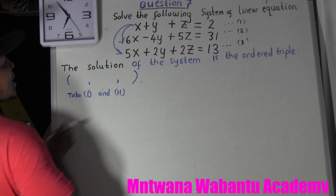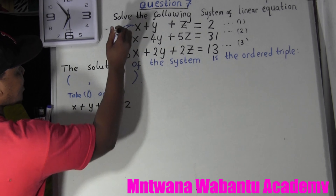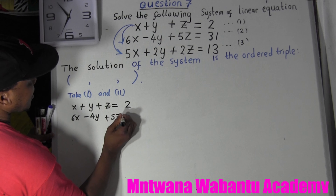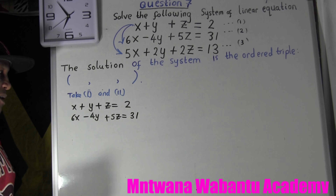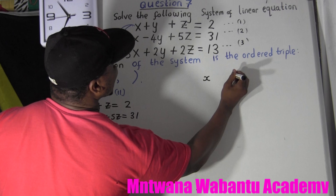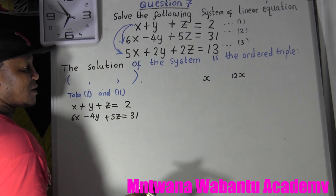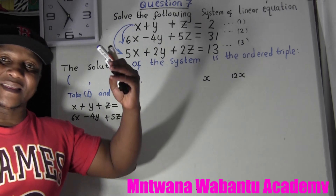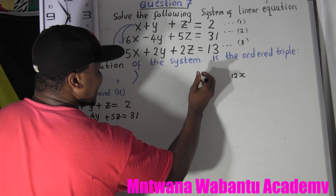Take the first equation: x + y + z = 2, and the second equation: 6x - 4y + 5z = 31. For me to get rid of x, the coefficients must be equal — so this one must also become 6x.